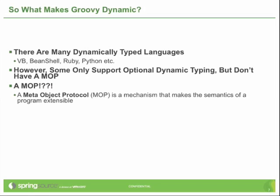So what makes Groovy dynamic? Groovy is dynamic in a number of ways. Groovy supports dynamic typing, unlike Java where every variable has to be statically typed or associated with a static type. That's not the case in Groovy — Groovy does support dynamic typing. So that's one part of what it means for Groovy to be dynamic.